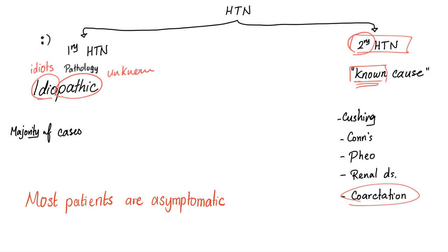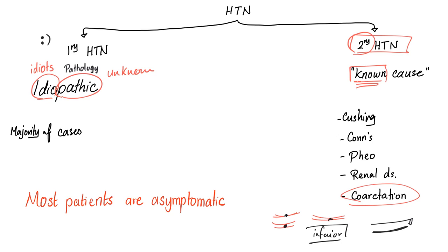Quick question: when you have coarctation of the aorta, what do you see on chest x-ray regarding the ribs? Rib notching. You see those tiny notches in your beautiful ribs. Is the notching on the upper surface or the lower surface of the rib? It's on the inferior surface of the rib, because this is where you normally find the neurovascular bundle. So the vessels are already running on the inferior surface of the rib — that's why when you get coarctation of the aorta, the notching will be on the lower surface.